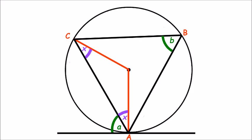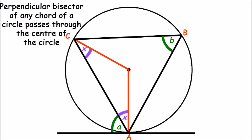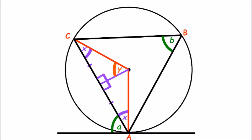If we apply the circle theorem that states that the perpendicular bisector of any chord of a circle passes through the centre of the circle, we can create two congruent right angled triangles and we can mark the angle at the centre of each triangle as Y.